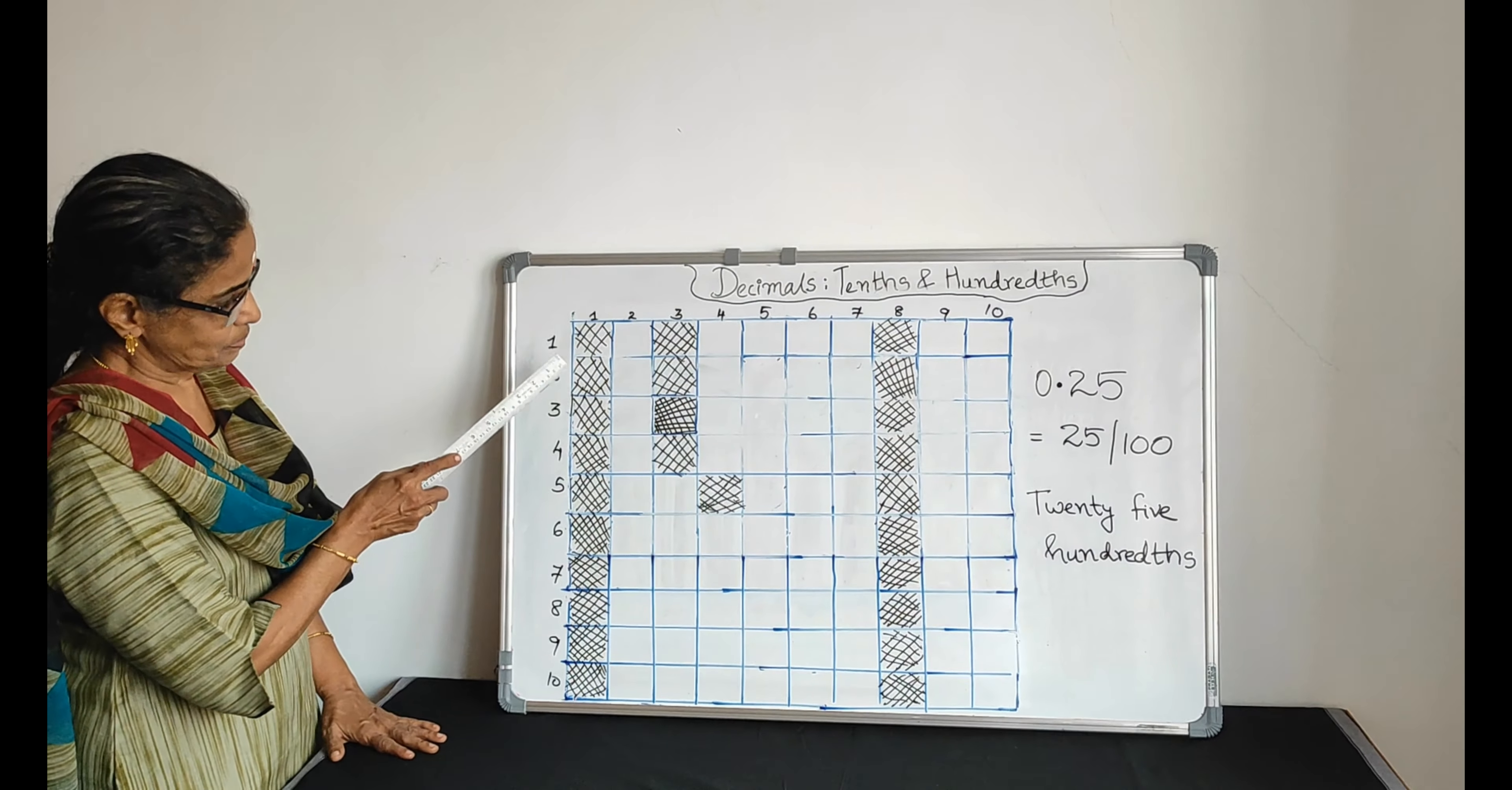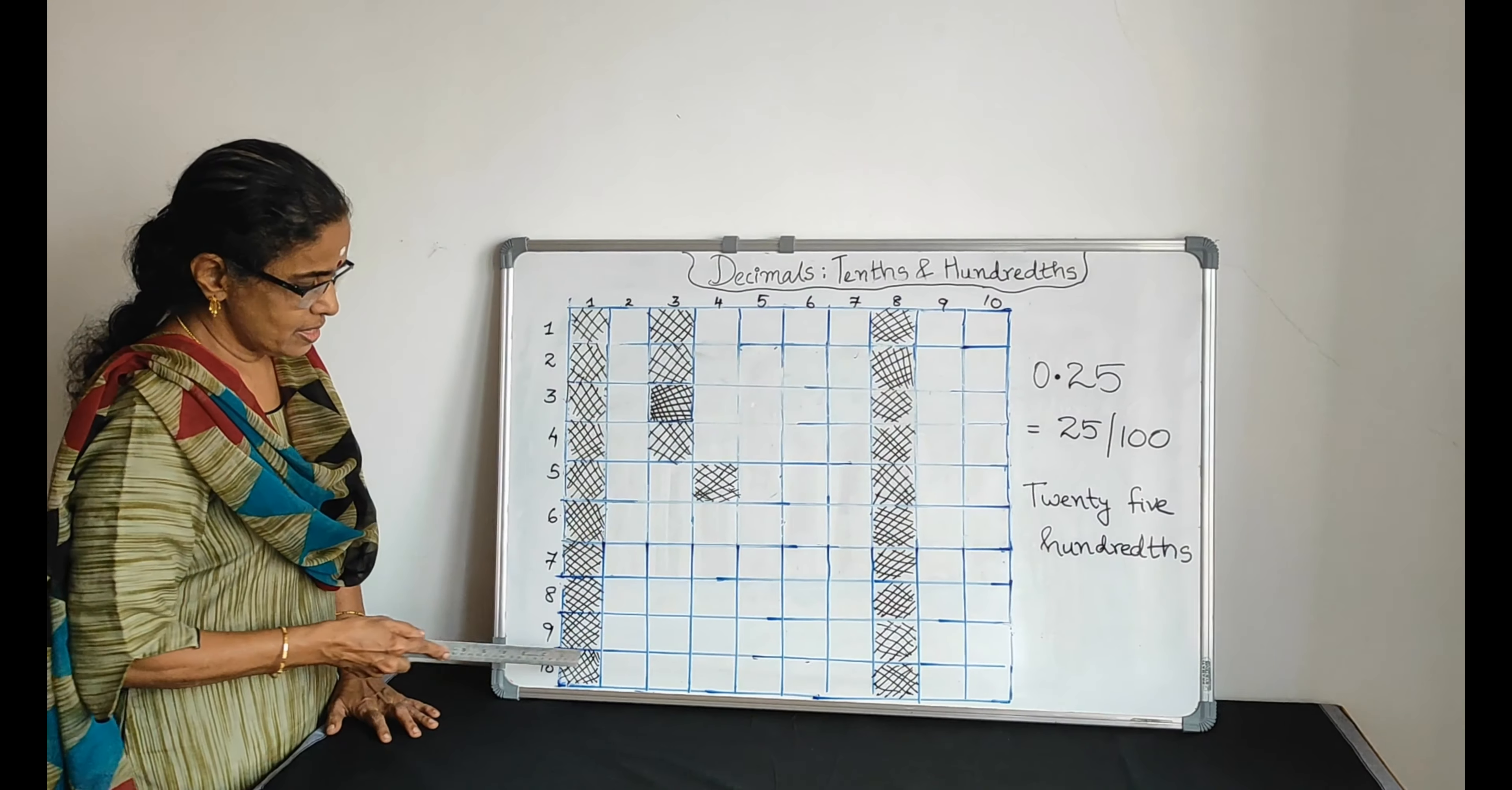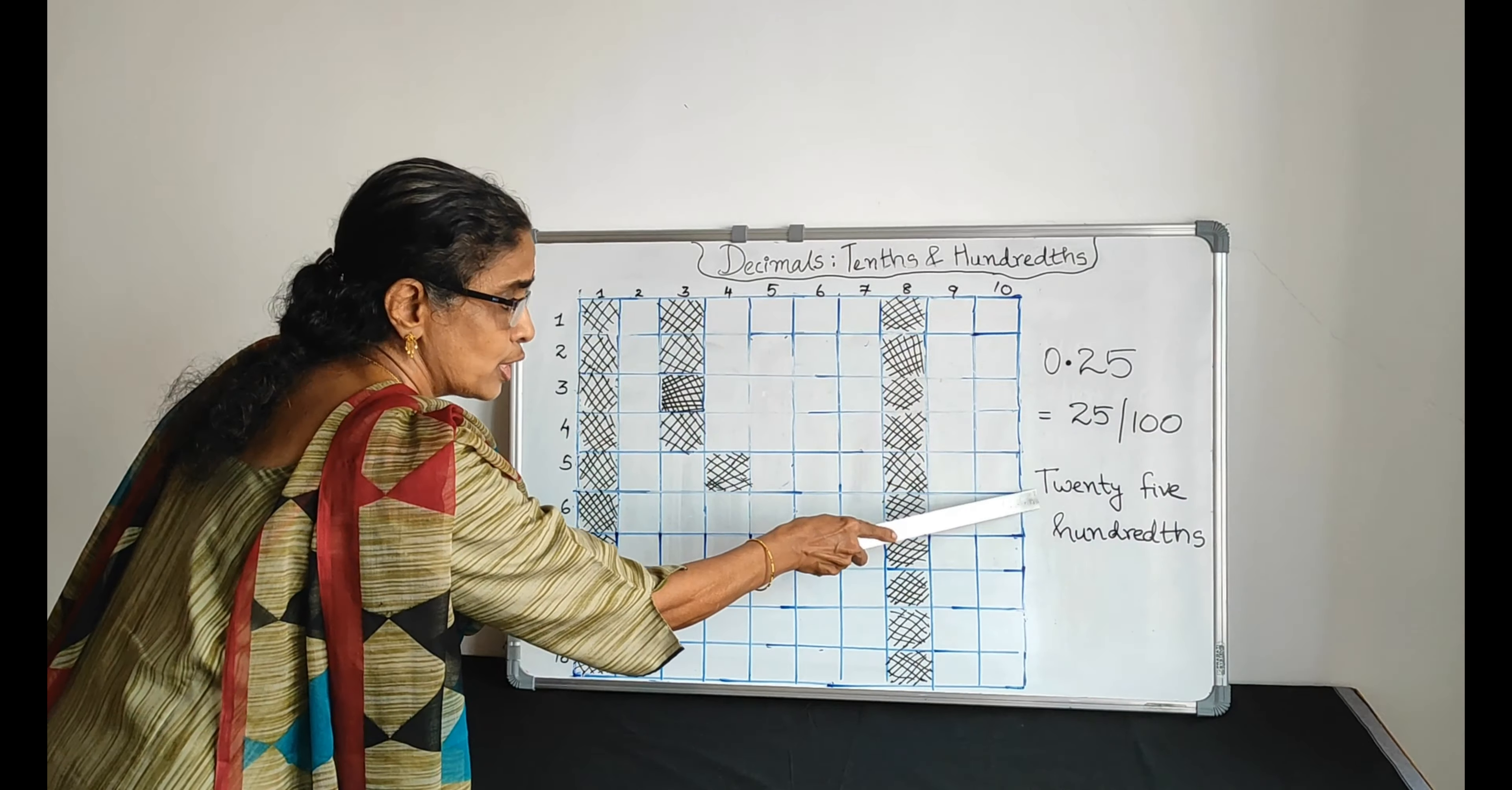Here, 10 parts are shaded here. Here another 10, so totally 20. Now again here: 21, 22, 23, 24, 25. Totally there are 25 parts shaded. 0.25, which is equal to 25/100. 25 hundredths.